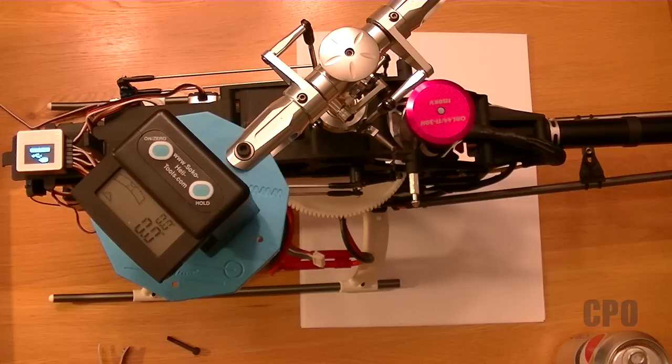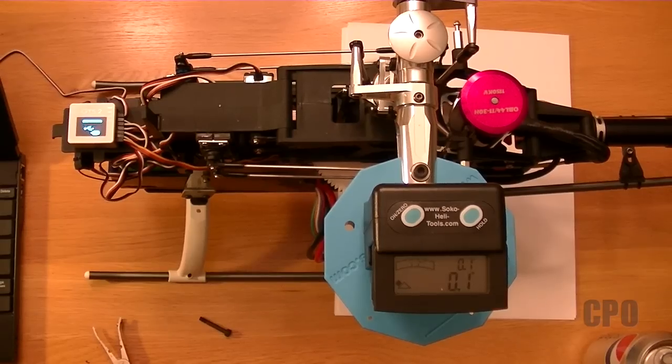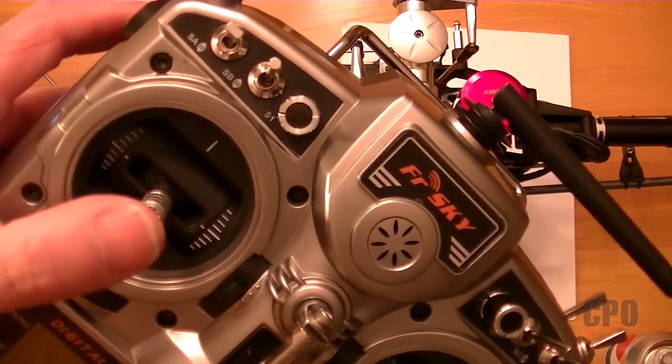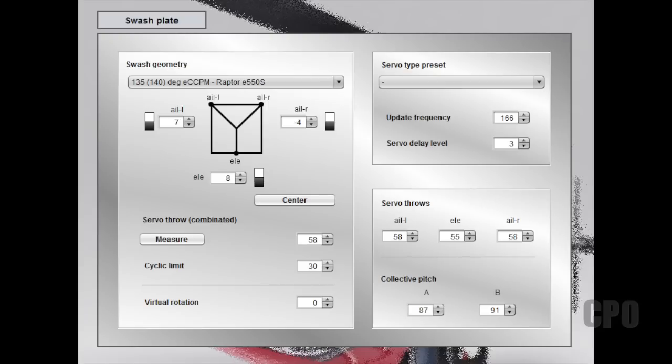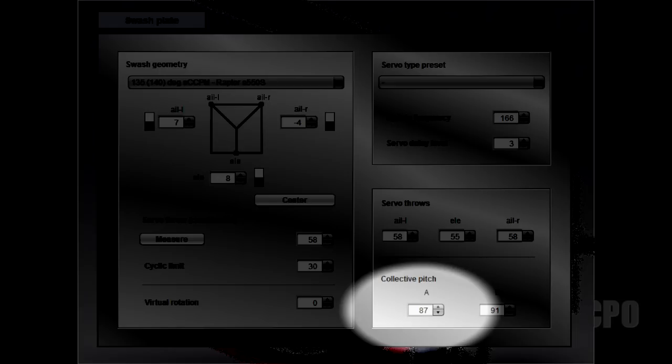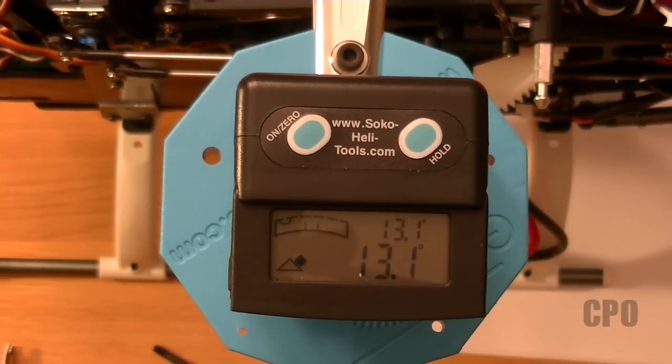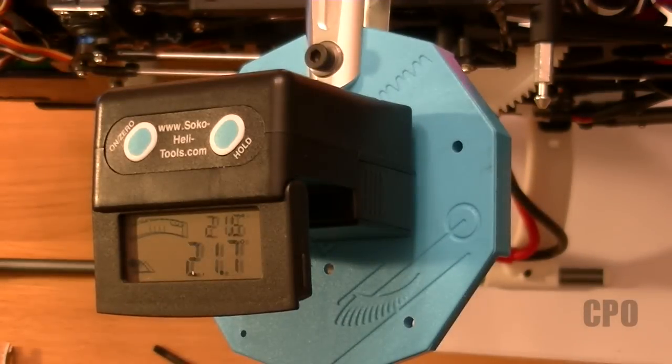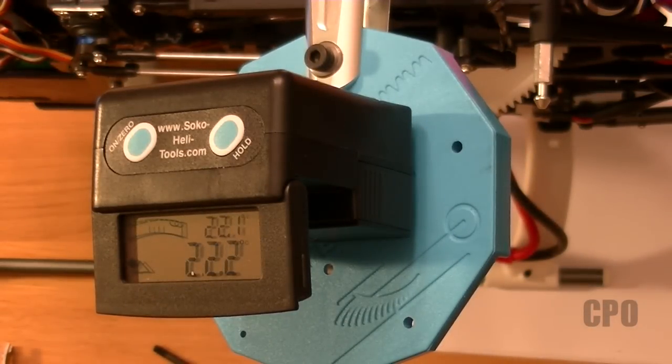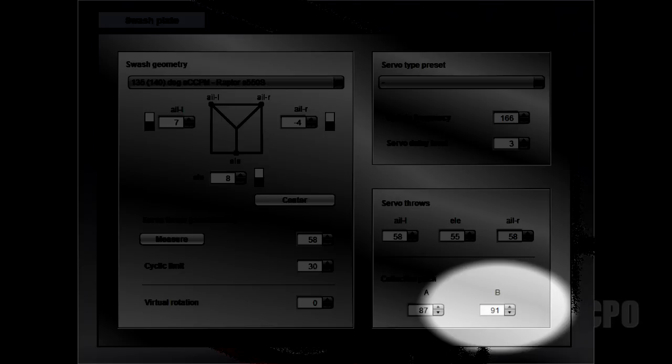Now that I have that complete I want to adjust the collective pitch range. I want the maximum and minimums to both be at 13 degrees. I'm going to deselect the center button so I have full range and push the collective stick all the way forward to maximum. Now I'm going to use the collective pitch A setting to adjust that so I get down to 13 degrees. Once I have that where I want it I'll pull the stick all the way to full negative collective and adjust that value with the collective pitch B setting. That will take care of the negative pitch adjustment.